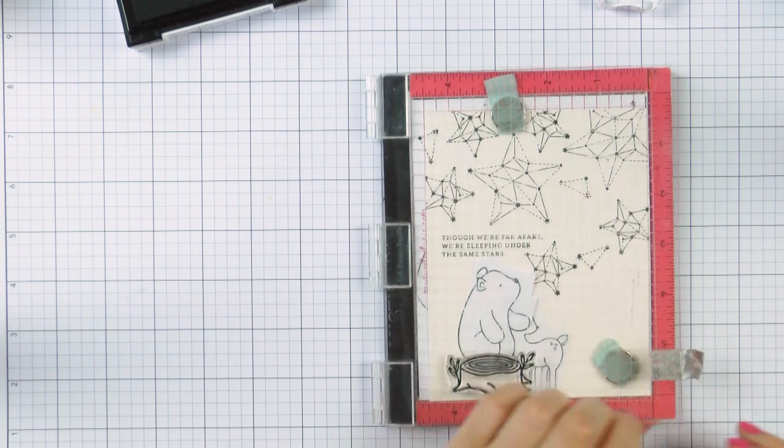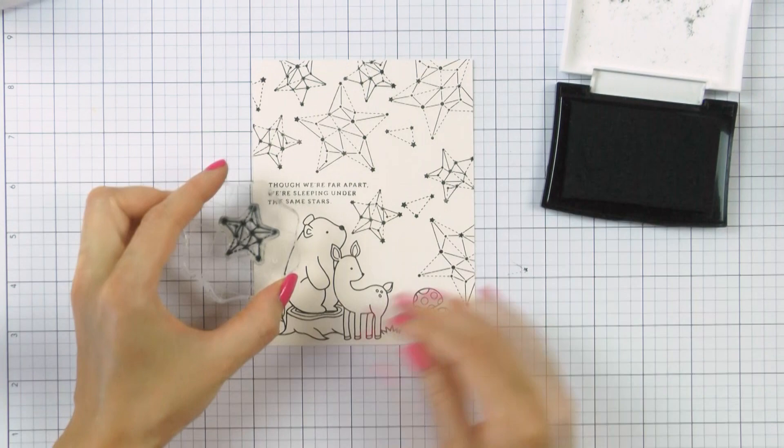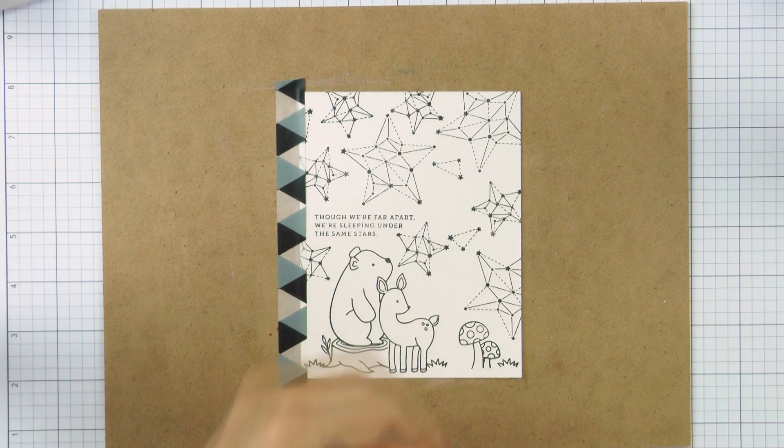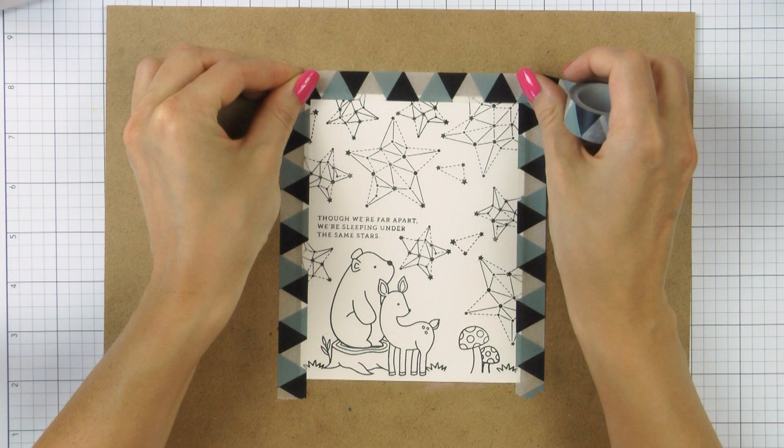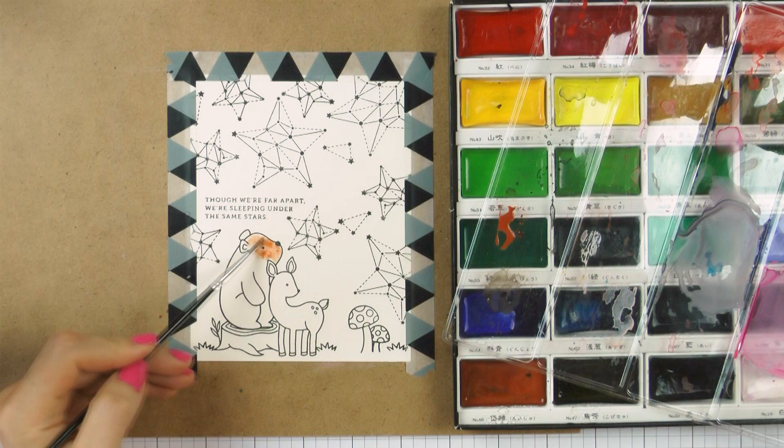Now that my stamping is done I can move on to watercolor part of this project. I am taping my panel onto the board. I will be adding quite a bit of water so I want this panel to warp as little as possible and taping it down onto the board does help to prevent warping quite a bit. I didn't tape the bottom as I stamped my images too close to the edge.